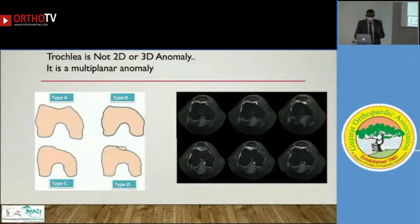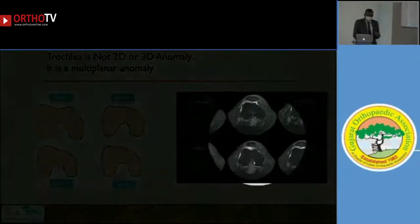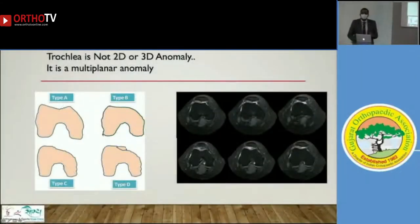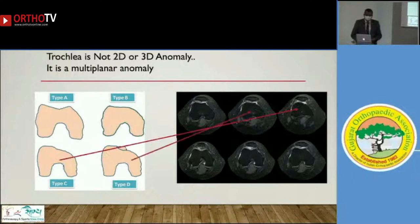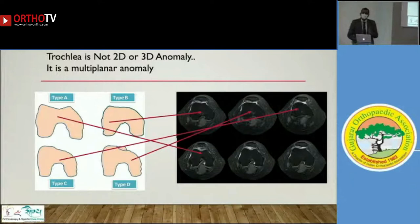If there is no one relationship, then why are we relying on Dejour's classification? Dejour is a good friend of mine, and I had followed his classification all these years, telling patients they had type A, B, or C trochlear dysplasia. But now I think that was actually the beginning of declassifying the trochlea lesion. Look at this case: all these sections are from one single female patient, yet one picture shows type C trochlear dysplasia, another shows type D, another type B, and another type A. One single patient at different levels of the trochlea has a different trochlear classification.